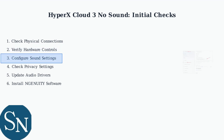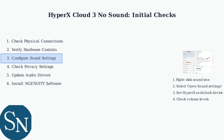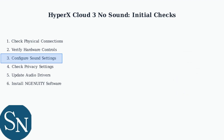Now check your computer's sound settings. Go to Windows Sound Settings and confirm that the HyperX Cloud3 is enabled and set as the default output device. This ensures Windows is routing audio to your headset.